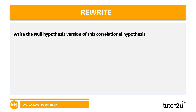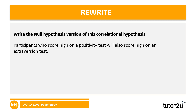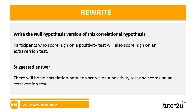Next, write a null hypothesis. The hypothesis to work with is: 'Participants who score high on a positivity test will also score high on an extraversion test.' There's space in your booklet next to question 10. Pause the video and have a go. The suggested answer is: 'There will be no correlation between scores on a positivity test and scores on an extraversion test.' Remember, for correlation the null hypothesis is about no correlation, not about difference.